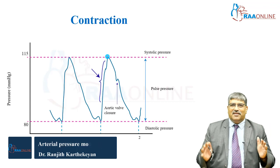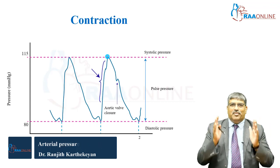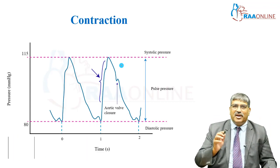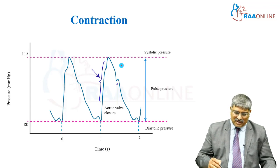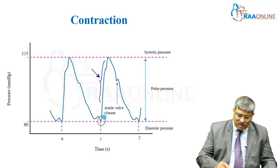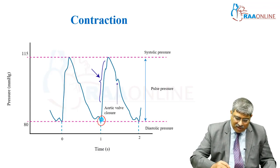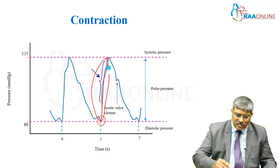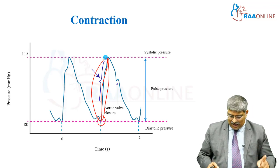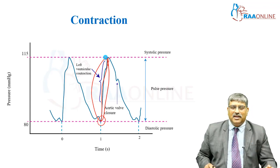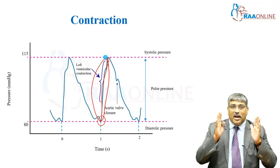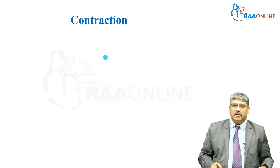Another important variable which you can detect from the arterial line is left ventricular contraction. Here, the aortic valve is opening and the ventricle contracts to send the blood out. This systolic upstroke is a sign of contractility in the heart. So from the arterial waveform, you can measure the contractility.